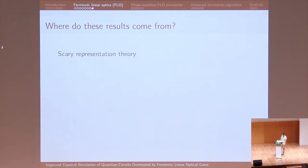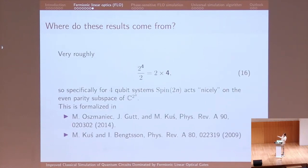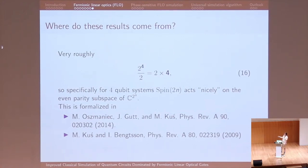Why do three completely independent research groups across Europe all get results for four-qubit magic states? The answer is ultimately some scary representation theory. The short answer is essentially because 2^4 / 2 equals 2 times 4 — both are eight. On the left-hand side you have the dimension of the Hilbert space of a four-qubit system restricted to one parity subspace. On the right-hand side, fermionic linear optical unitaries are essentially a representation of the group Spin(2N), which has a natural action on 2N-dimensional complex vectors. In four dimensions, the action on your Hilbert space ends up being exactly this nice natural action that Spin(2N) has on 2N-dimensional unitaries.